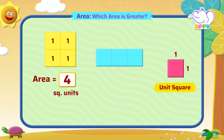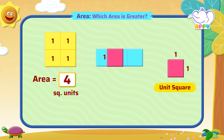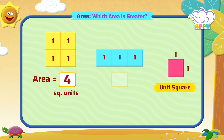The area of the second shape is one, two, three. That is three square units.